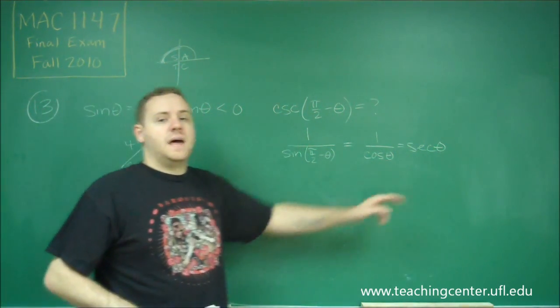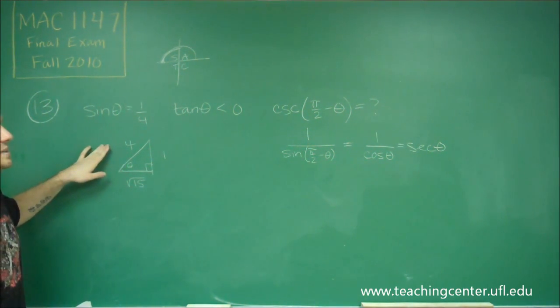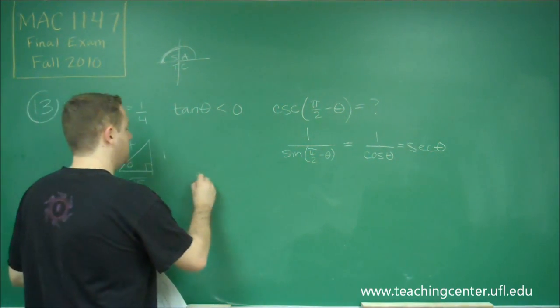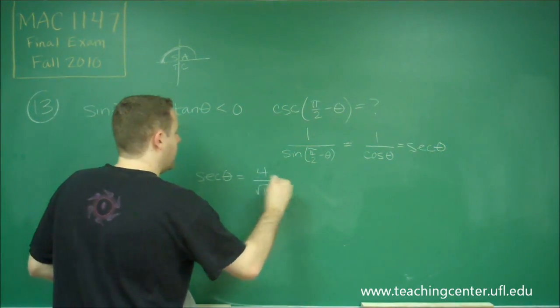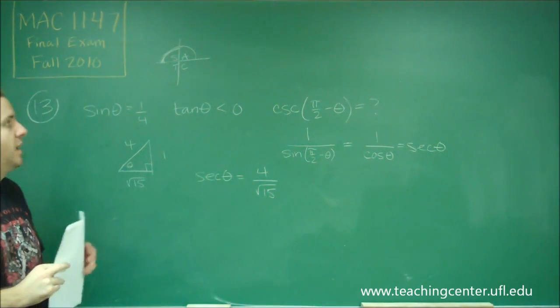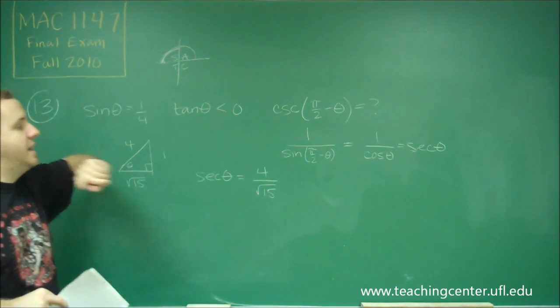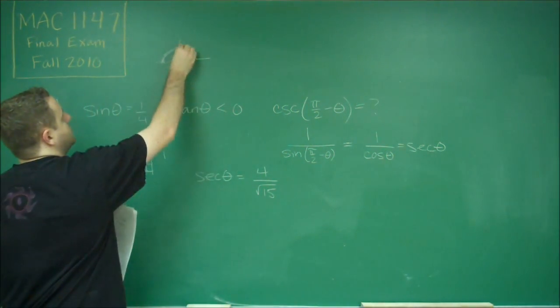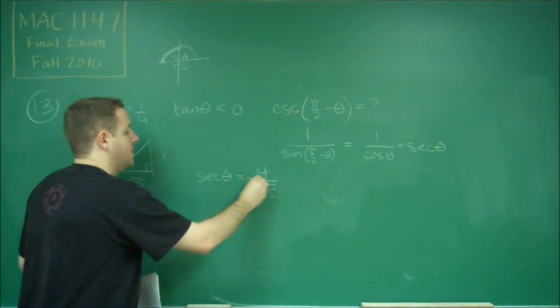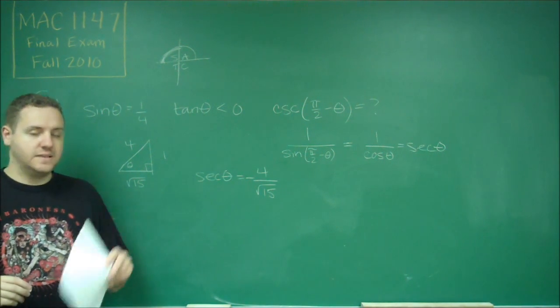We want secant of that angle. So secant is the opposite of cosine. So cosine would be adjacent over hypotenuse, but we have secant, so we want hypotenuse over adjacent. So secant of theta is going to be 4 over square root of 15. And the last thing we need to keep in mind is, we were in the second quadrant. Is secant positive or negative in that quadrant? Well, secant has the same positive or negative sign as cosine. And quadrant 2, cosine is negative, so this has to be negative 4 over square root of 15. So that gives us, then, answer choice D.